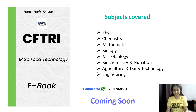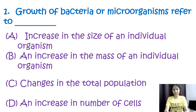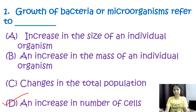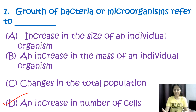Question number one: growth of bacterial microorganisms basically refers to — options are increase in the size of an individual organism, increase in the mass of an individual organism, change in the total population, or an increase in the number of cells. The correct option is D, an increase in the number of cells. While size or mass of an individual bacterial cell might change slightly, the primary indicator of microbial growth is the increase in the number of cells.